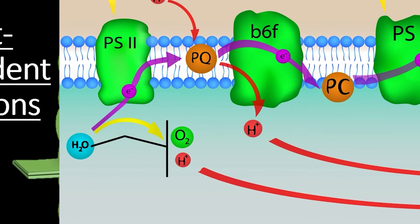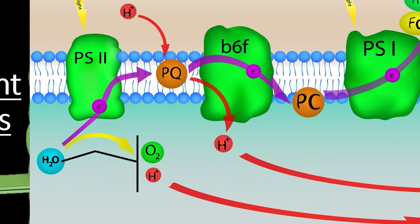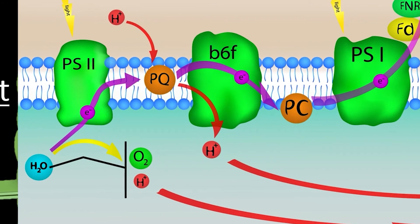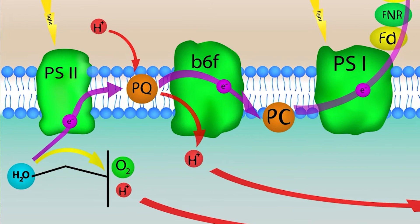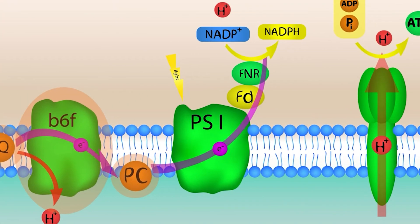The electrons from this reaction start flowing through the electron transport chain, while the hydrogen atoms start accumulating in the thylakoid lumen. The electrons travel through a molecule of plastoquinol, or PQ, before they reach a proton pump that pumps more hydrogen ions into the thylakoid lumen. The electrons then make their way through another molecule known as plastocyanin, or PC, before reaching photosystem 1.